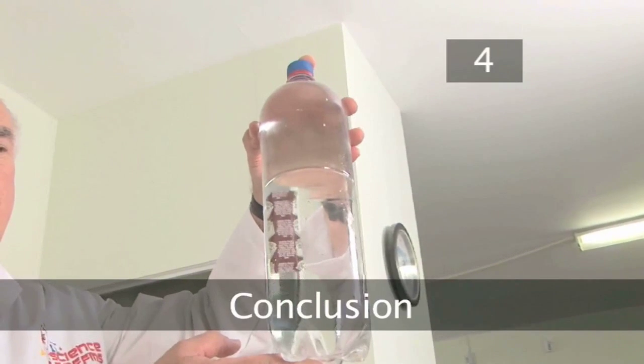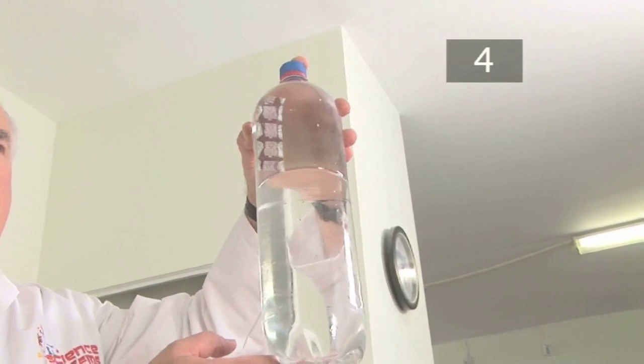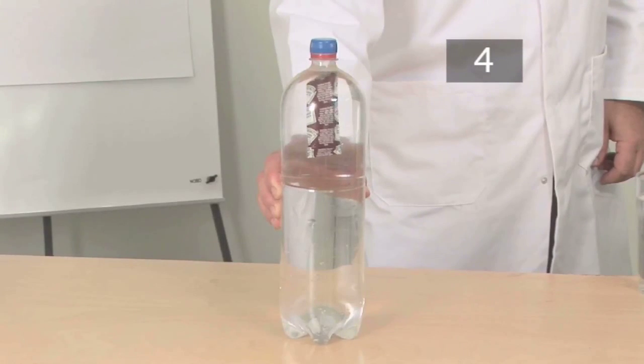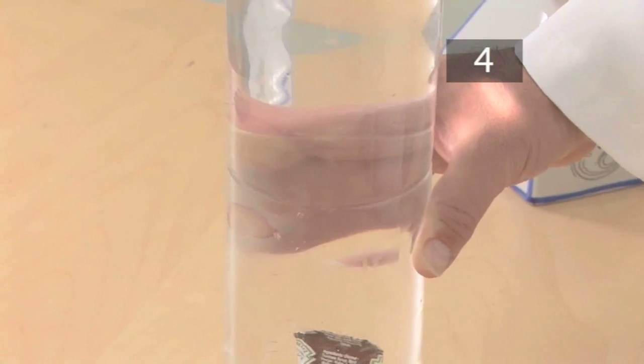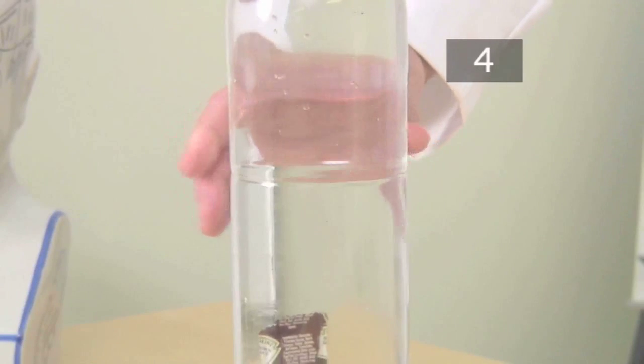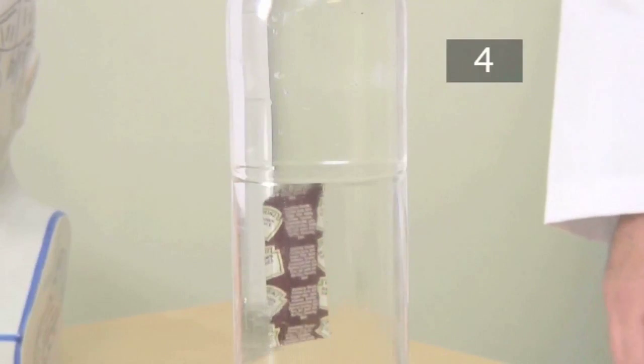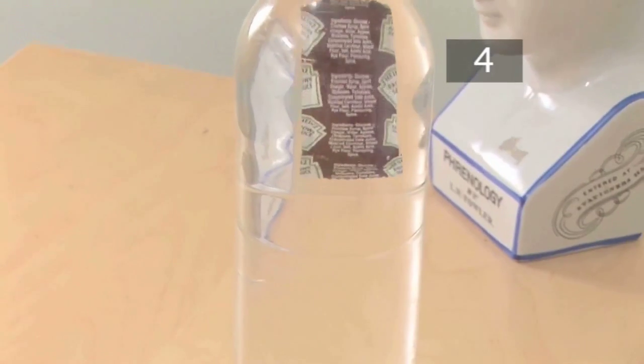Step 4. Conclusion. Why did this happen? This experiment demonstrated the principle of buoyancy, which is that if the water that is displaced or pushed aside by an object weighs more than that object, then it will float. If it weighs less than the object, then it will sink.